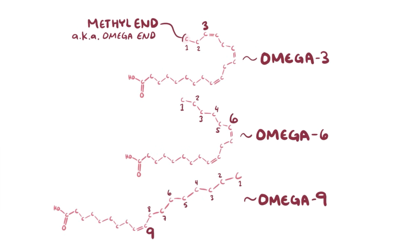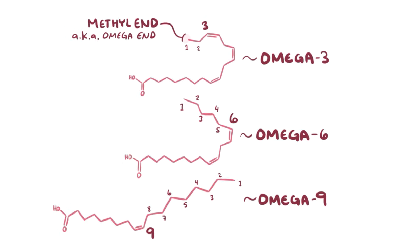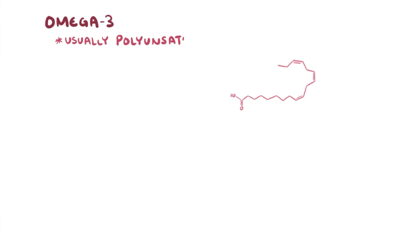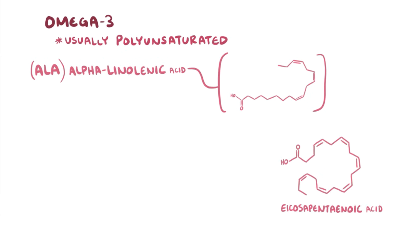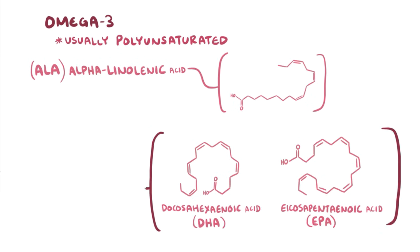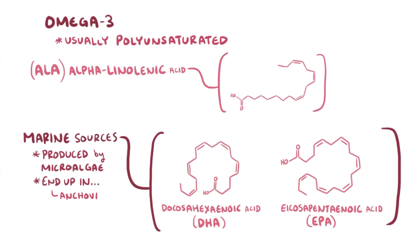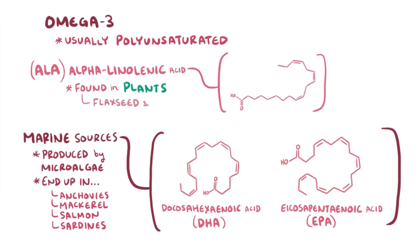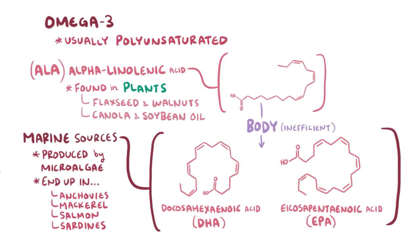Omega-3s are usually polyunsaturated fatty acids and include alpha-linolenic acid (ALA), eicosapentaenoic acid (EPA), and docosahexaenoic acid (DHA). EPA and DHA are marine sources of omega-3s — they're produced by microalgae and end up in the tissues of fish like anchovies, mackerel, salmon, and sardines. ALA is found in plants like flaxseed, walnuts, and canola and soybean oils. Our bodies can convert ALA into EPA and DHA, but it's an inefficient process that yields only small quantities, which is why dietary recommendations include foods that have EPA and DHA.